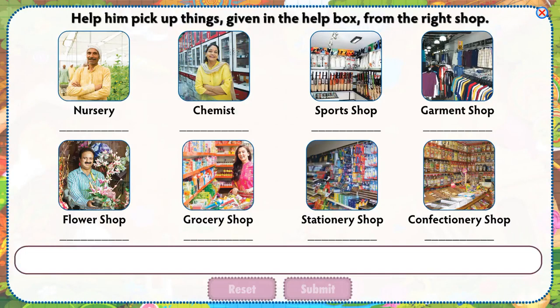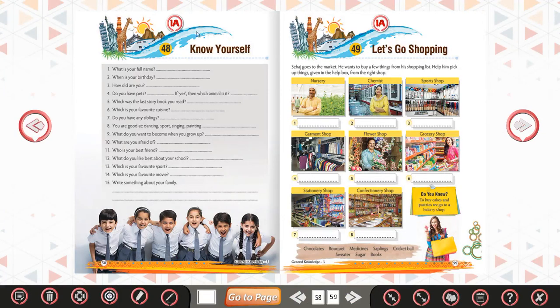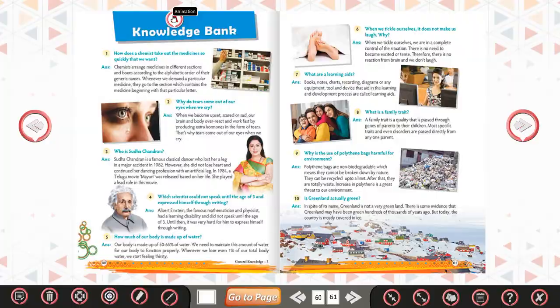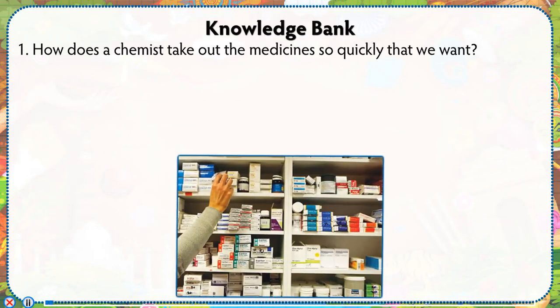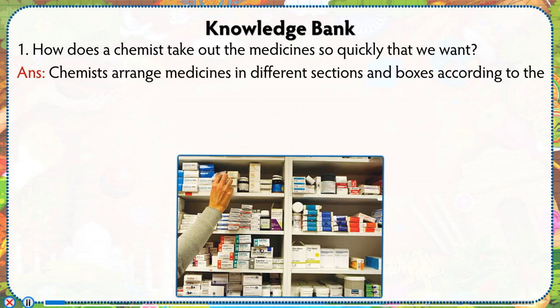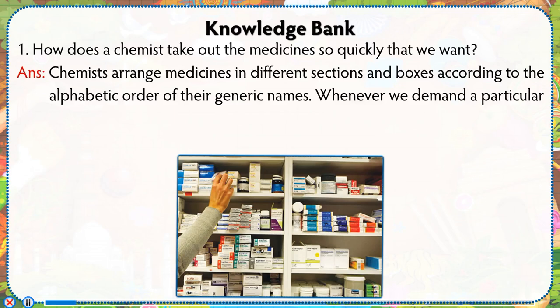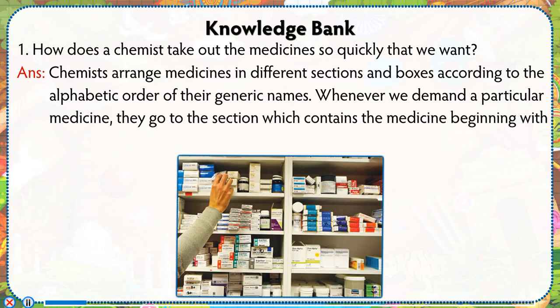Help him pick up things given in the help box from the right shop. How does a chemist take out medicines so quickly? Chemists arrange medicines in different sections and boxes according to the alphabetic order of their generic names. Whenever we demand a particular medicine, we go to the section which contains the medicine beginning with that particular letter.